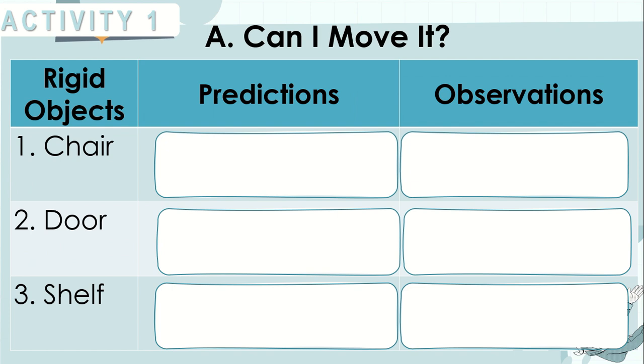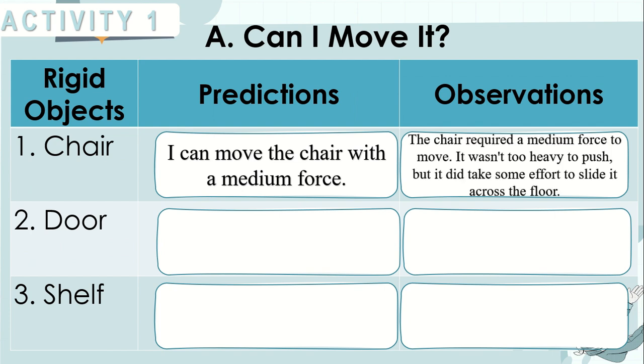Here are the possible answers. For the predictions for chair, I can move the chair with a medium force. Observation, the chair required a medium force to move. It wasn't too heavy to push, but it did take some effort to slide it across the floor.